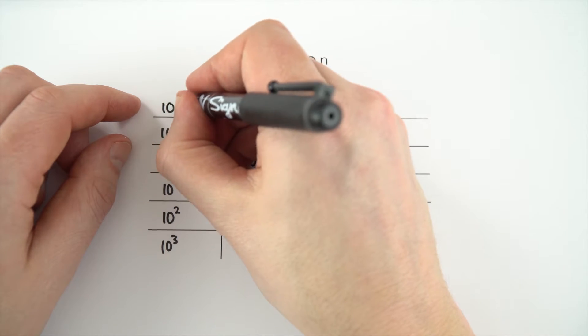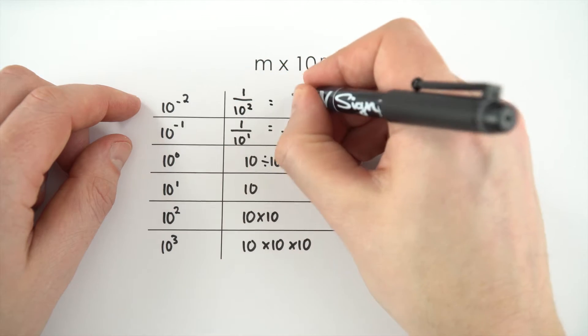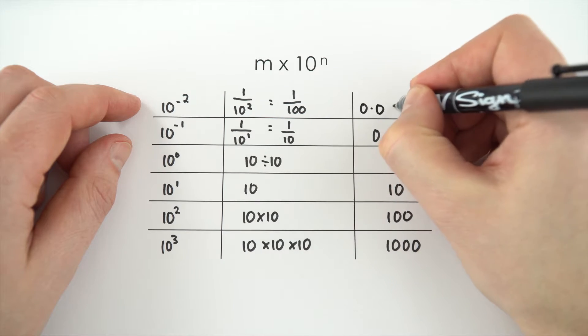As we go back to 10 to the minus 2, this is the same as 1 over 10 squared. So that's 1 over 100, which is 0.01.